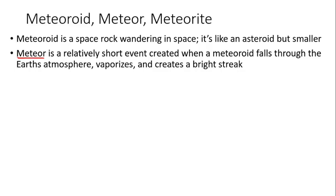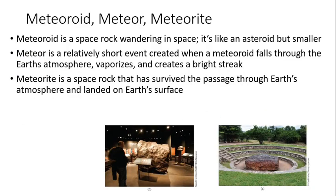So a meteor is actually a quick event — that's the material falling through. If there is enough material left when it has fallen through or hit the Earth, enough to pick up, we call that a meteorite. A meteorite is something you can pick up from the Earth. Most meteorites are not that large. Earth actually picks up about a ton of mass each day just from meteorite material, but a lot of it is what we call micrometeorites. So: meteoroid, meteor, and meteorite.